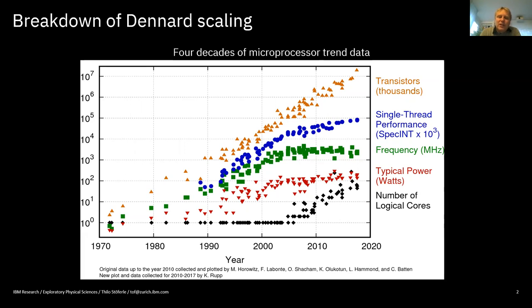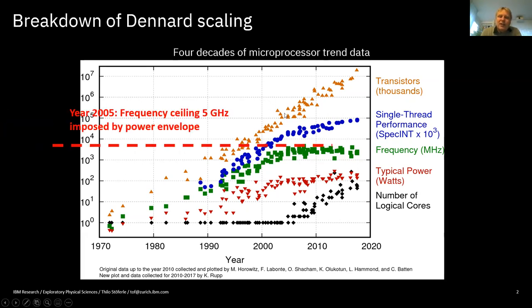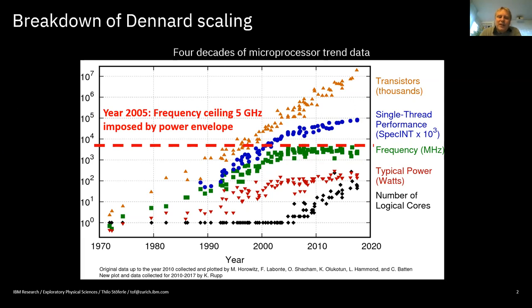Moore's Law is still holding up even in 2020, but some of the curves flattened out much earlier. For example, the clock frequency started to level off around 2005 at about 5 GHz — so the clock frequency of processors has not really increased since 2005, for about 15 years. The reason is the breakdown of so-called Dennard scaling, which means when you make transistors smaller you can make them faster within the same power envelope — and this is no longer true since about 2005.